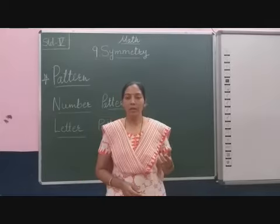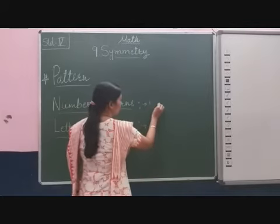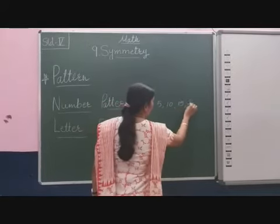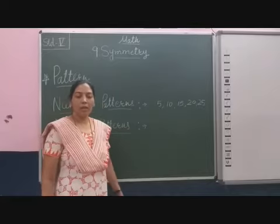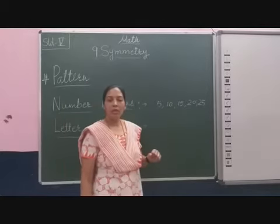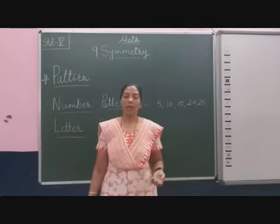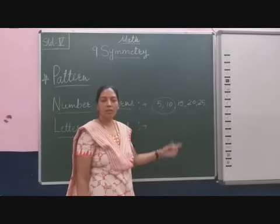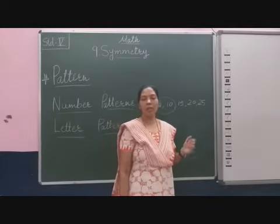A particular pattern may be a skip counting by 5. For example, start from 5: 5, 10, 15, 20, 25. So these numbers form a number pattern. Have you observed this? It gives the multiples of 5 — we can say skip counting by 5. There are also descending order patterns and ascending order patterns. First we have to understand the relation between the two given numbers, and then we can easily understand what pattern is given.